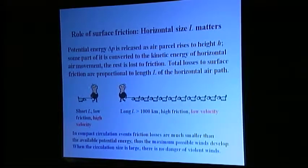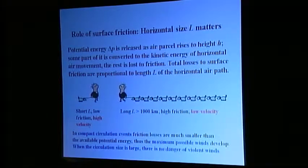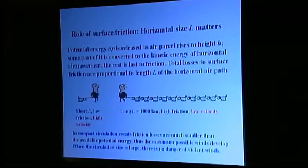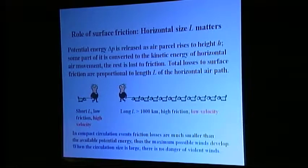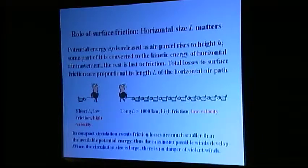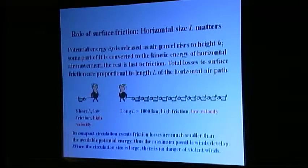If, on the other hand, the circulation event develops over a thousand or more kilometers, then friction losses become substantial. Winds are generated by condensation, but there is not enough energy remaining for hurricane velocities to develop. We conclude that in order to prevent hurricane or tornado formation, one should prevent condensation from occurring in relatively small, isolated areas.